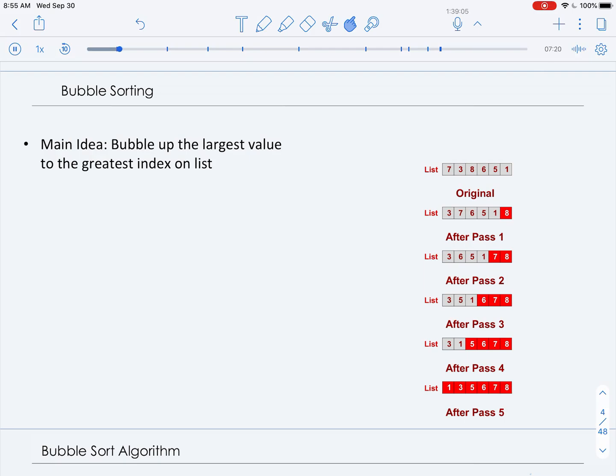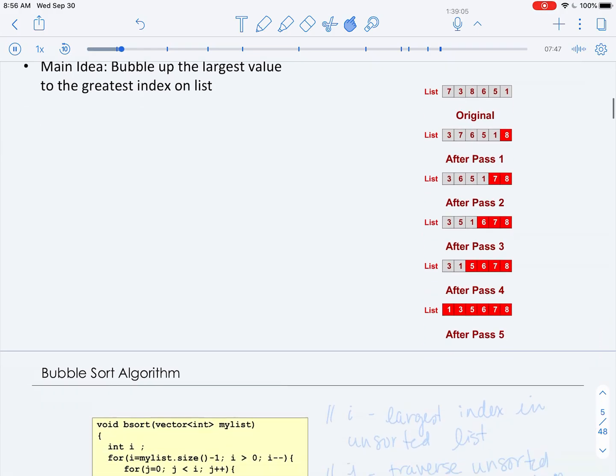So you can see on each pass, we have the sorted segment, the red segment growing, and the unsorted segment, the gray segment of the list decreasing. On our first pass of bubble sort, given our original list, we would bubble up the largest available value, 8, to the largest index in the list. And then on our next pass, we'd bubble up 7, and then we'd bubble up 6, 5, and so forth. So let's look specifically into the details of how we do this now.